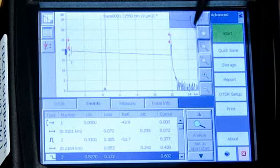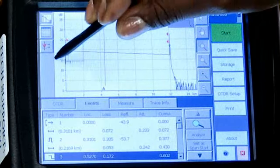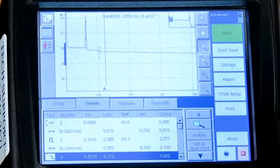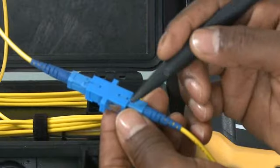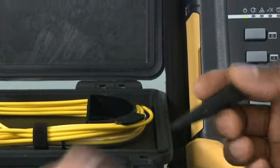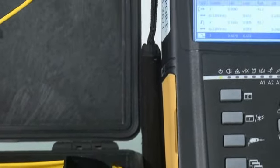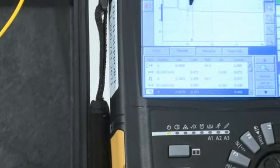The reason for the reflective peaks is the discontinuity that exists between a connector pair. There is a minute gap between the connectors. A splice has no discontinuity, and that's why it only has attenuation associated with it.